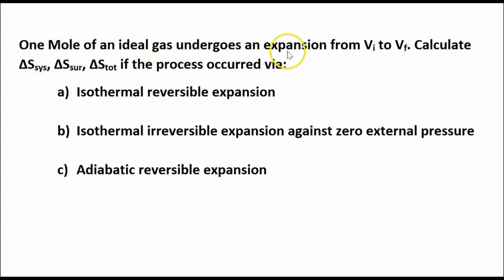So we have a mole of ideal gas undergoing an expansion from V1 to V2, and we want to calculate all the change in entropies: system, surroundings, and the total. If the process occurred three different ways: an isothermal reversible expansion, an isothermal irreversible expansion against zero external pressure, and then an adiabatic reversible expansion.